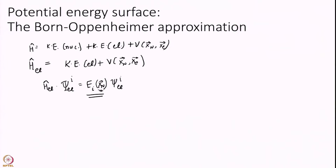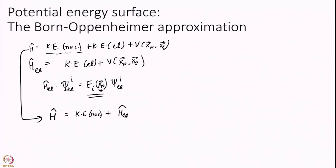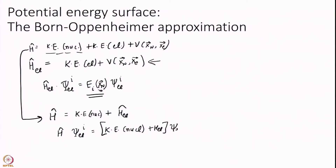So E_i depends on X_N - but this is only the H electronic part. My real Hamiltonian was the full thing including kinetic energy of the nucleus. So the full H is kinetic energy of nuclei plus H electronic. Now if I apply this H to psi electronic of i, something interesting happens: I get kinetic energy of nuclei plus H electronic acting on psi electronic.